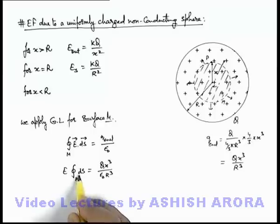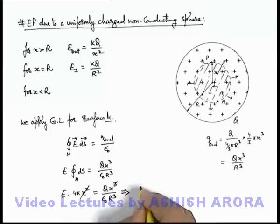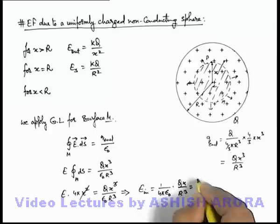And the total integration of dS for the Gaussian surface M can be written as 4 pi x square, which is Q x cube by epsilon not R cube. Here x square also gets cancelled out, and on simplifying we can see the value of electric field at an interior point P can be given as 1 by 4 pi epsilon not, Q x by R cube, which can be written as kQx by R cube.